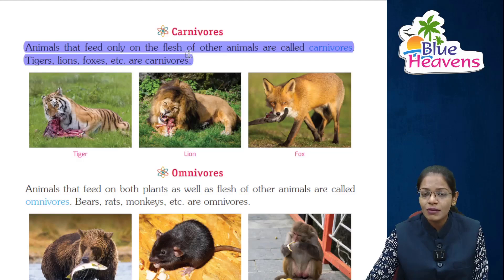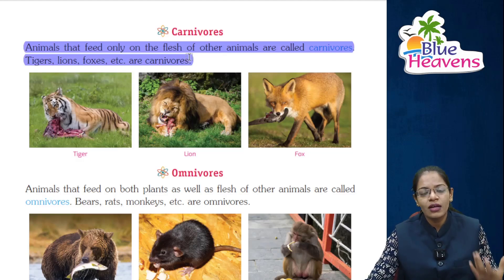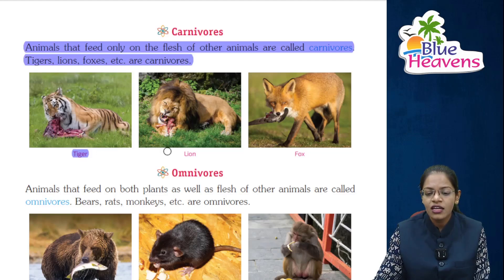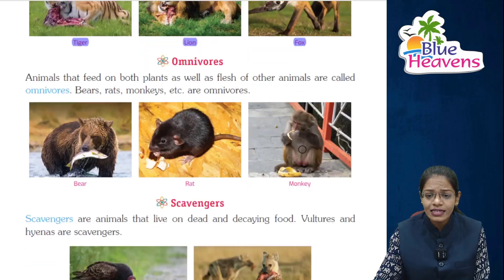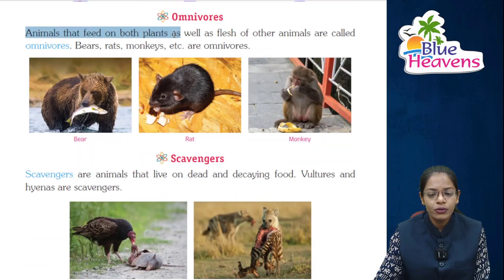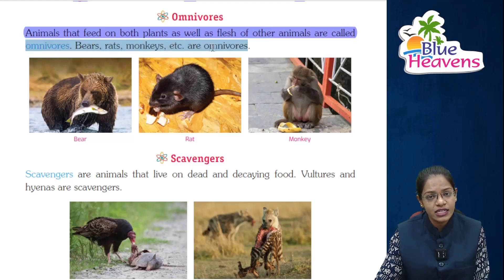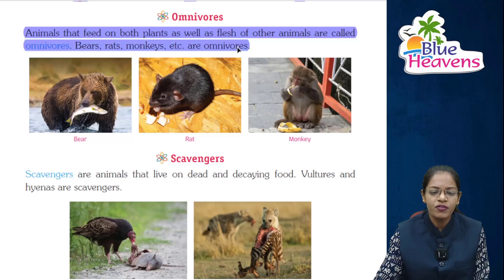Animals that feed on both plants as well as flesh of other animals are called omnivores. Bears, rats, monkeys, etc., are omnivores.